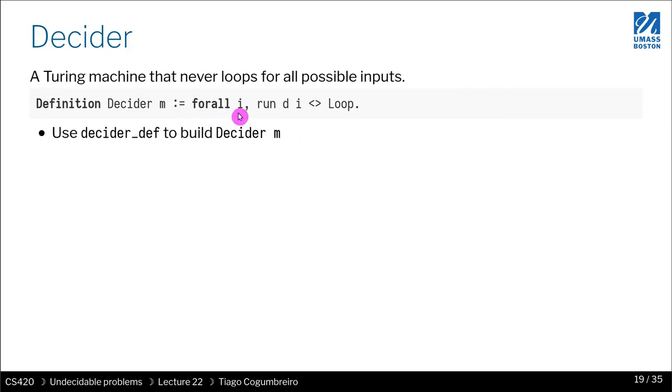The decider is just something that says that for all inputs, if I run the machine, this should be an M. Actually, it's a mistake. But in the library, it's correct. So for every machine M that I give it an input, its result is not going to be loop. Right? So it's either accepts or rejects, but never loops.